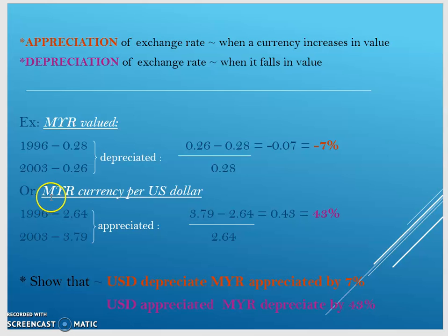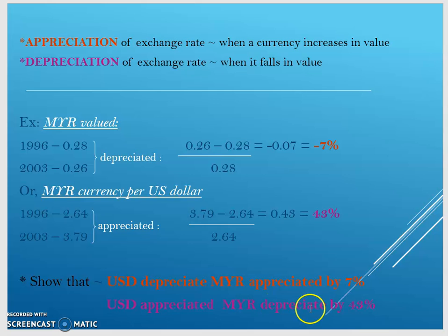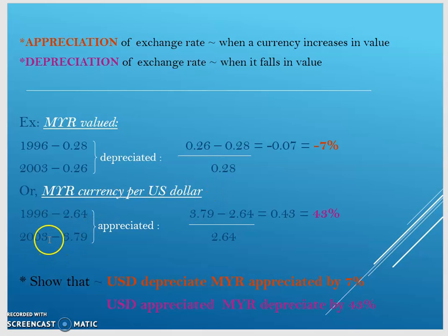Looking at the Malaysian Ringgit per US dollar: in 1969, one dollar was equivalent to 2 Ringgit 64 cents, and in 2003 one dollar was equivalent to 3 Ringgit. This means the USD was appreciating while the Malaysian Ringgit depreciated by 43 percent. By 2013, one dollar required 3 Ringgit 79 cents.